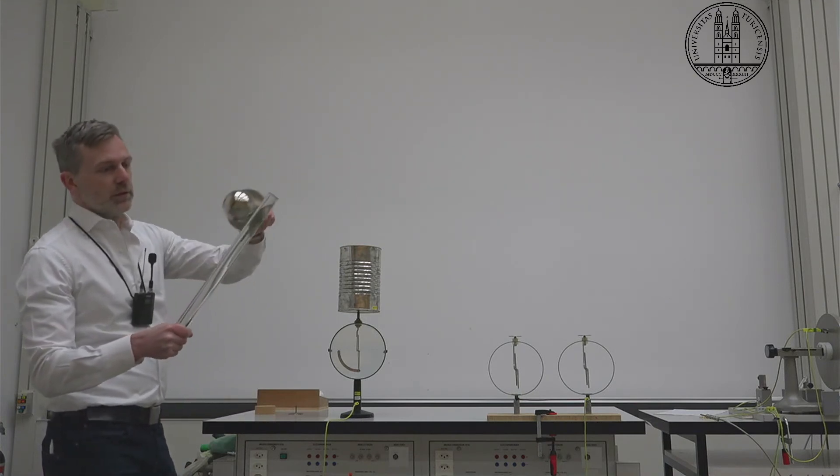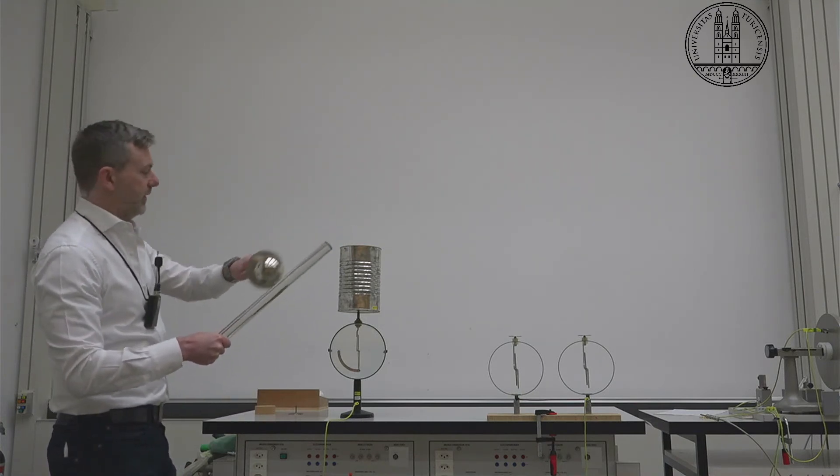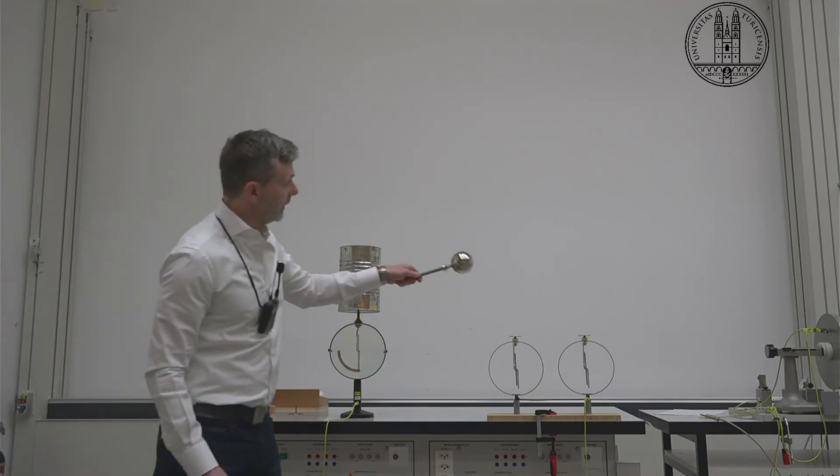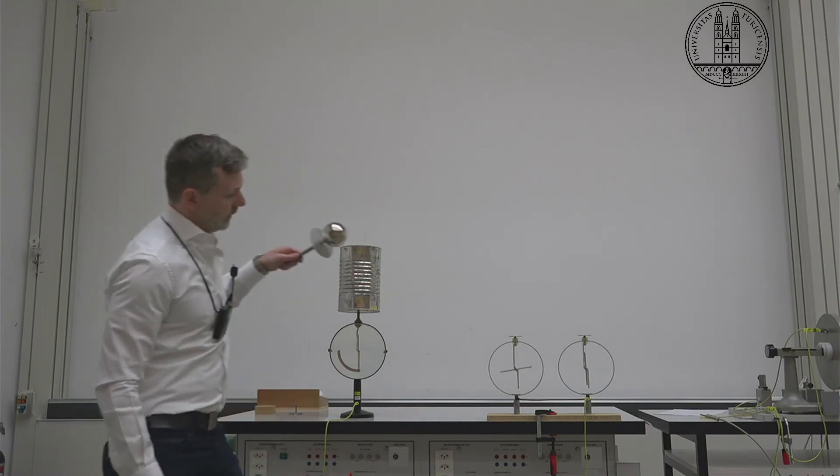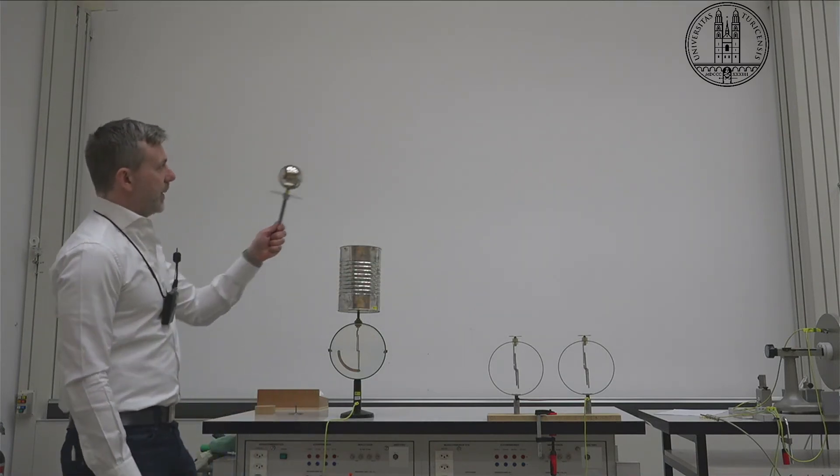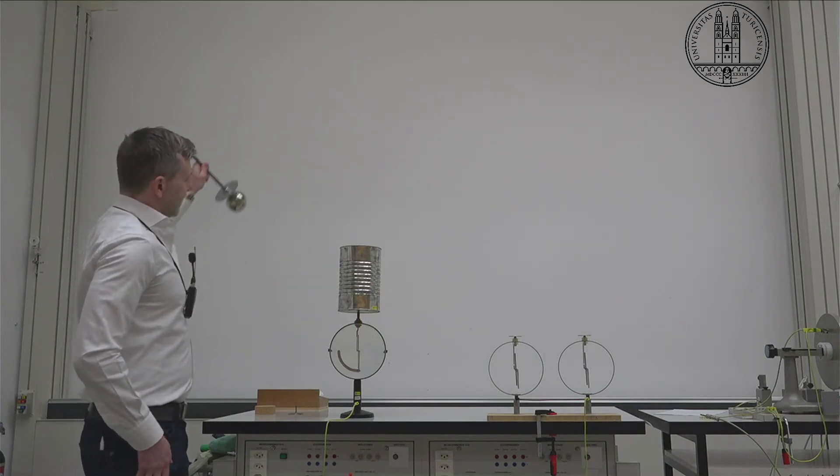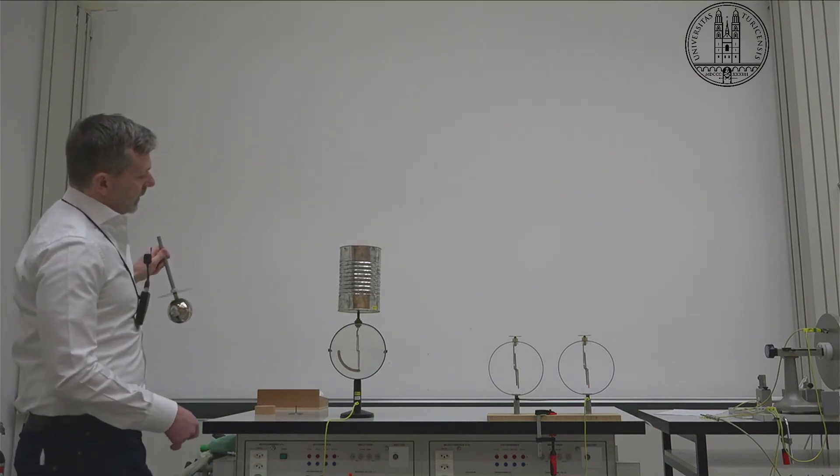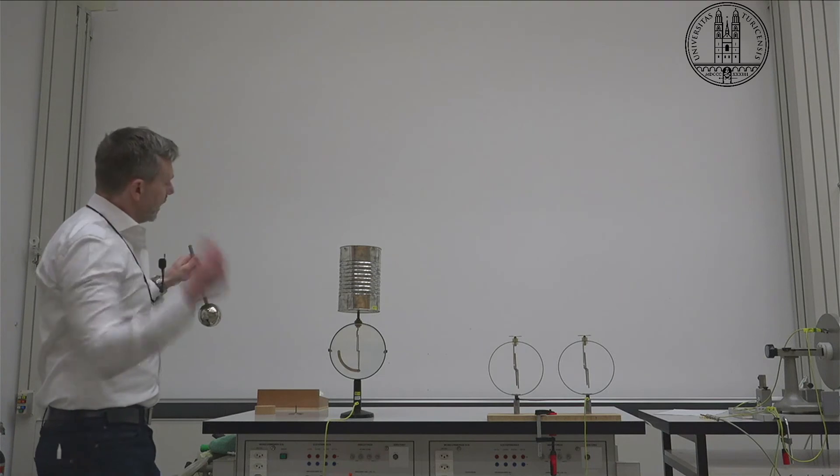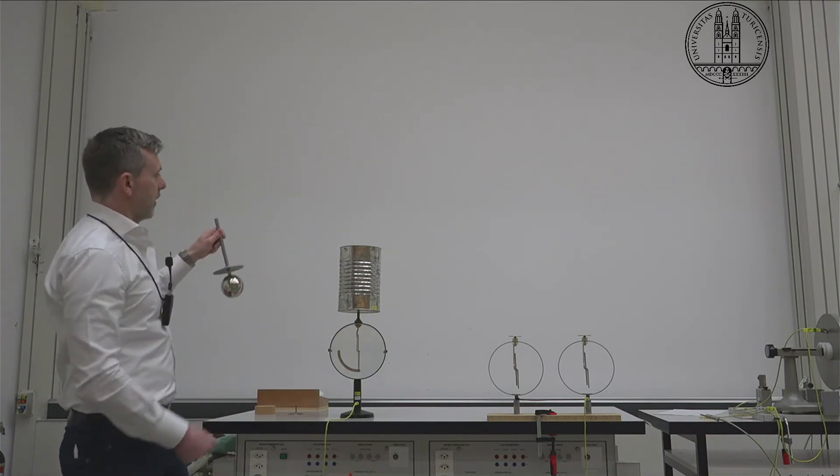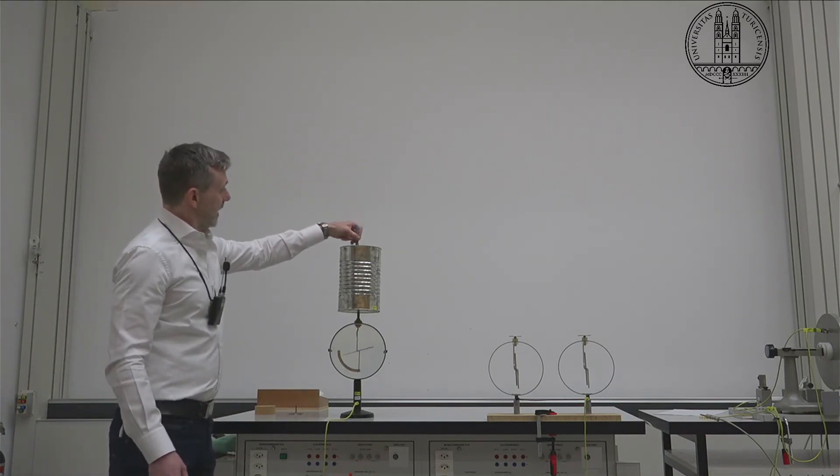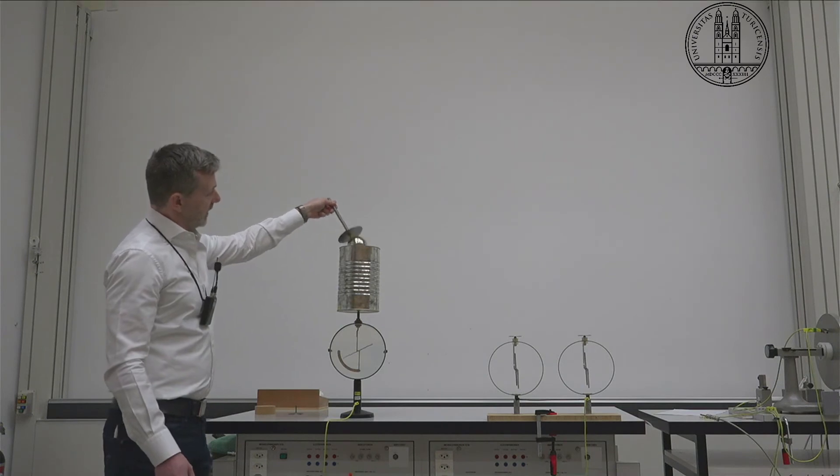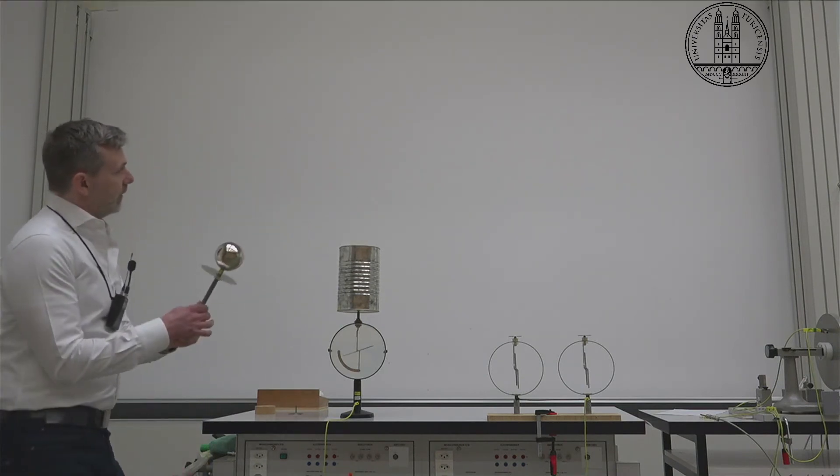We're going to charge up our sphere here and we can see in fact over here on this other electrometer that there is charge on this rod here and when we put this inside our can we see that charge is induced on the can and now what we want to do is move the charge so we stick it inside and we touch the inside now and we take it out.